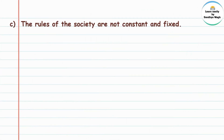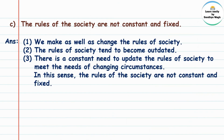The rules of society are not constant and fixed. We make as well as change the rules of society. The rules of society tend to become outdated, so there is a constant need to update them to meet the needs of changing circumstances. In this sense, the rules of society are not constant and fixed.